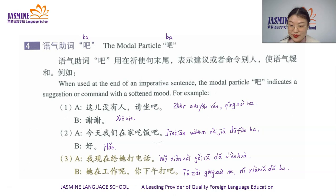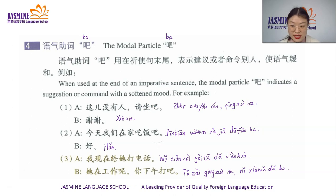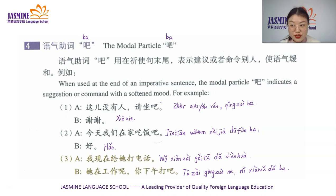If we don't say 吧 at the end of the sentence, we can just say 请坐. That expresses your suggestion with a strong mood — not a softened mood. 这儿没有人，请坐 sounds like a command.